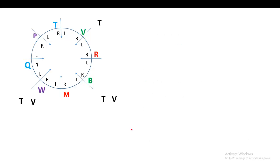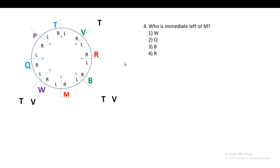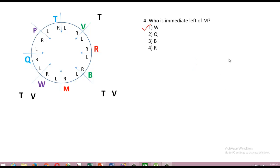The next question: who is the immediate left of M? Locate M on the diagram — to the left of M is W. So the immediate left of M is W, and the first option is correct.